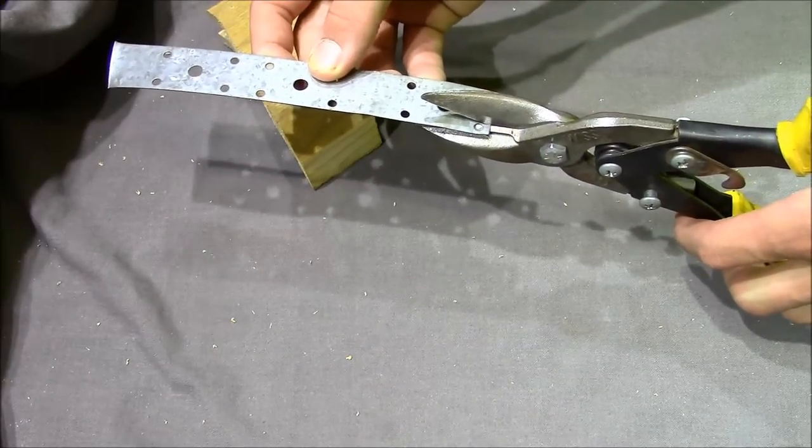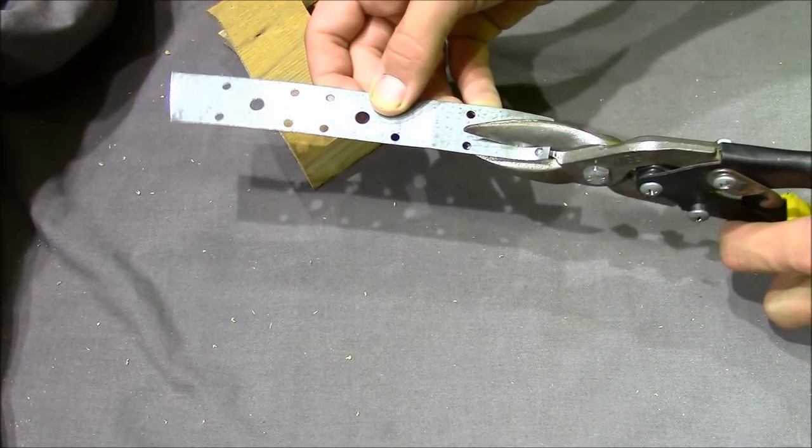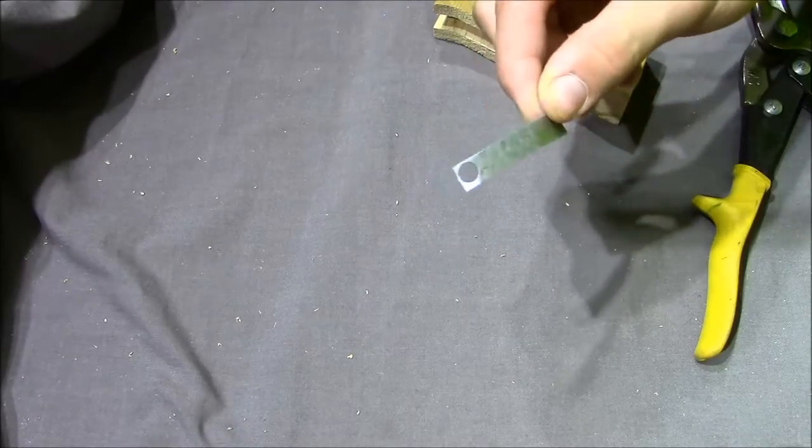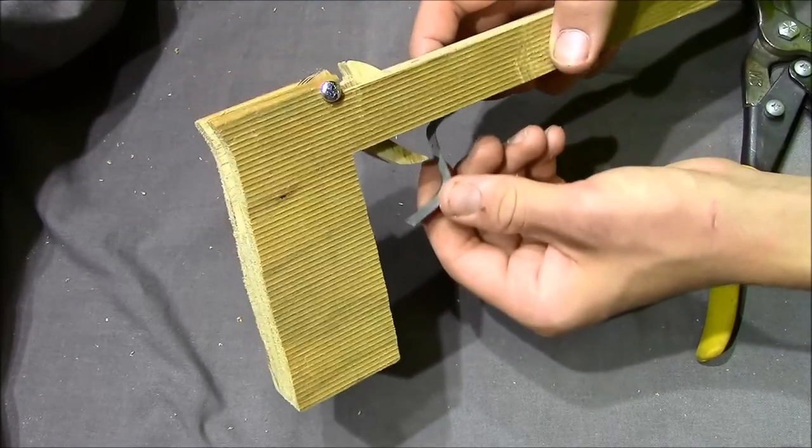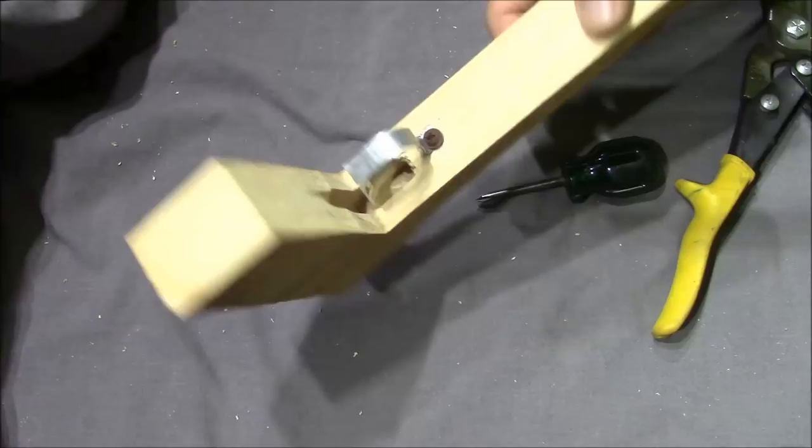I'm now just cutting a small strip of metal for the trigger guard. Now just bend it to shape, drill a hole and screw it to the bottom of your crossbow.